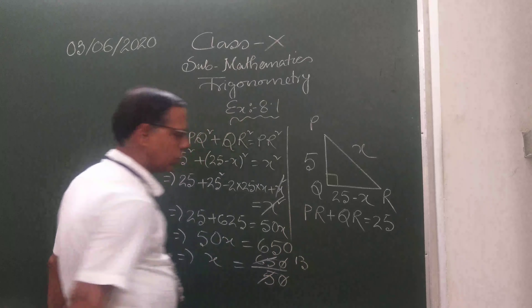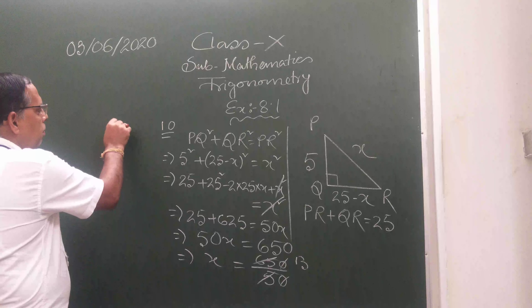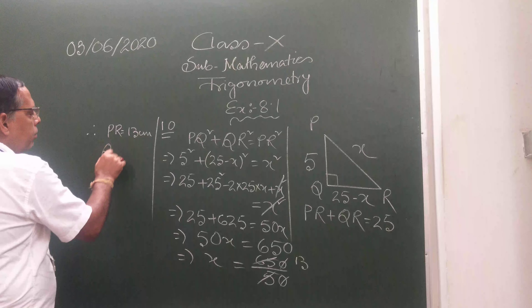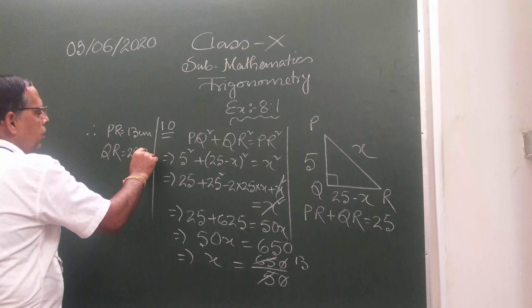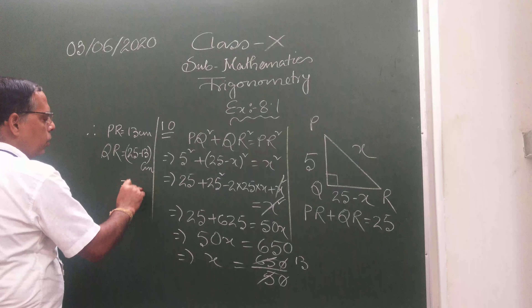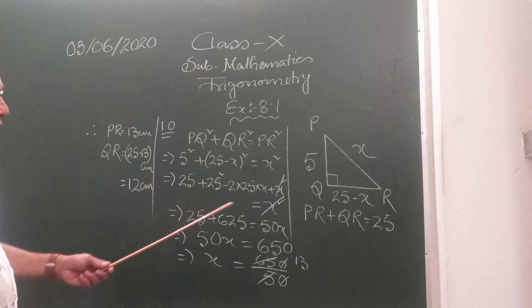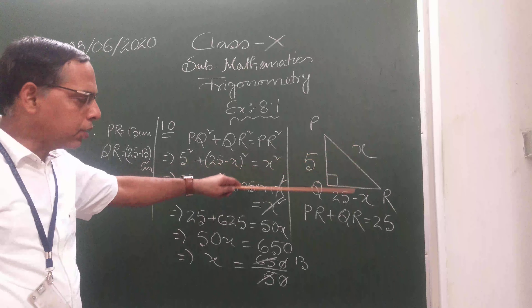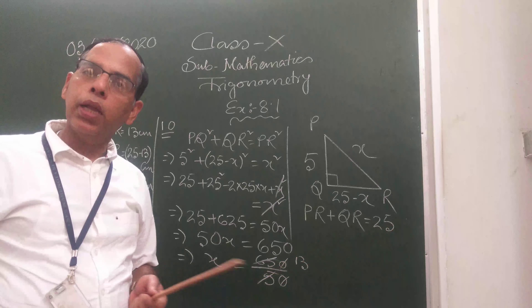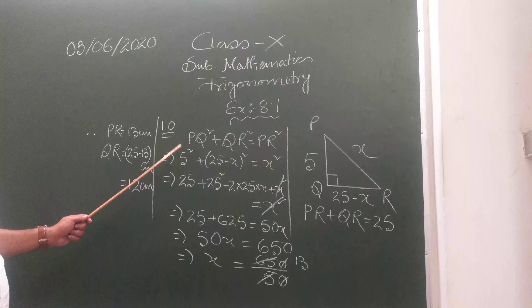So X = 13 means PR = 13 centimeters. Therefore QR = 25 − 13 = 12 centimeters. To summarize: draw the diagram, let one side be X since the sum of two sides is given, subtract to get the other side, then apply Pythagoras theorem — altitude² + base² = hypotenuse² — to find X = 13, and QR = 12 centimeters.